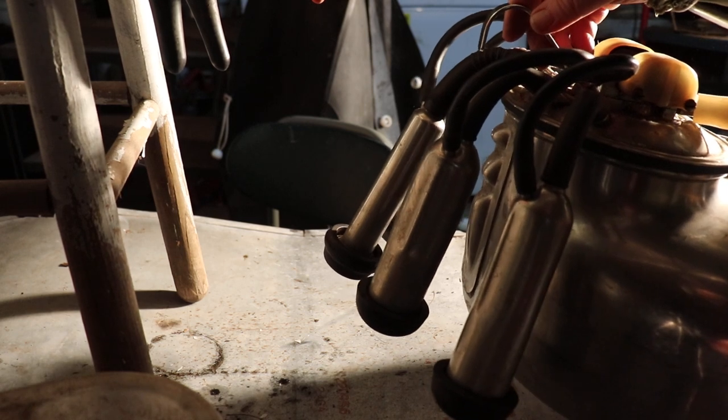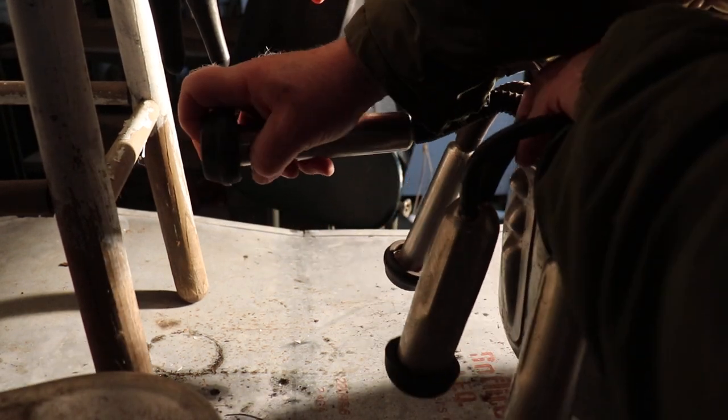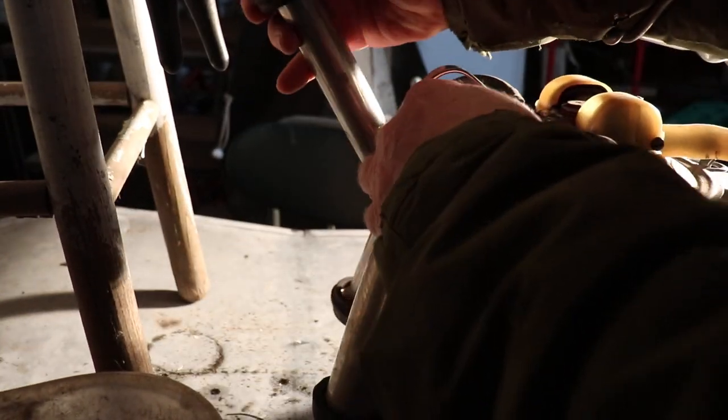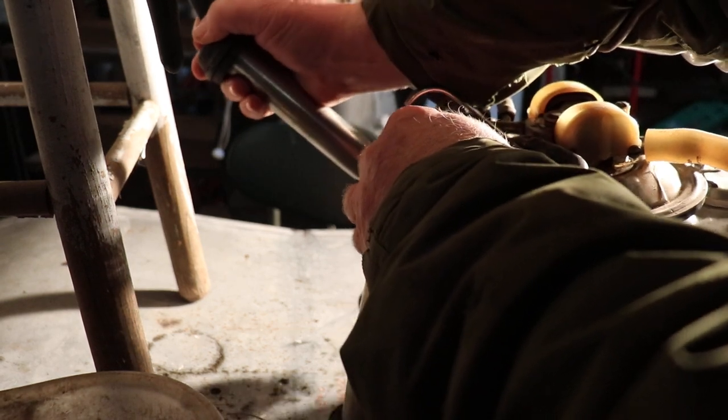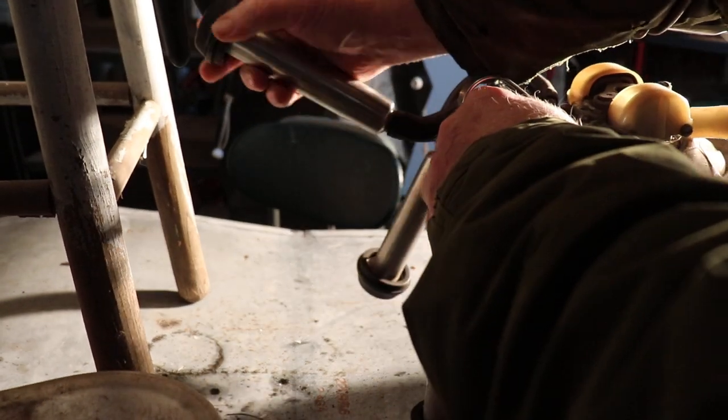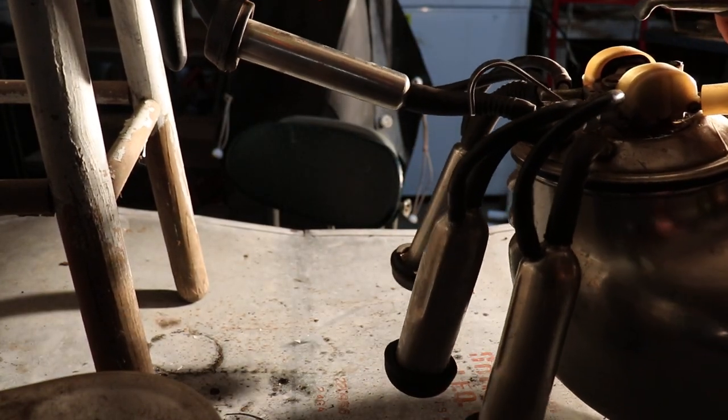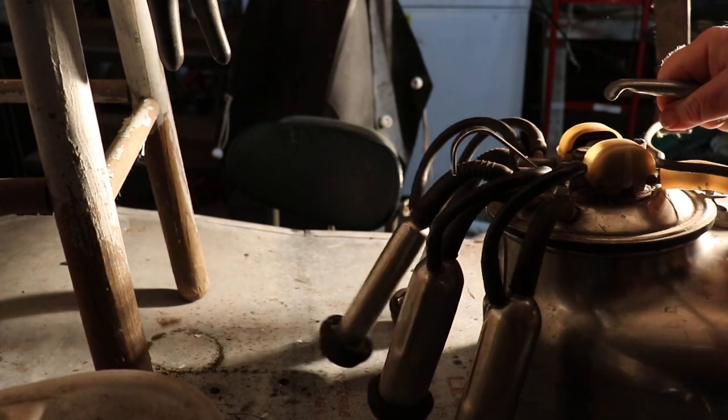You start out by grabbing the farthest back tit cup away from you. Put a kink in the hose so it isn't sucking vacuum. Grab it by the top so you can guide the teat in like this. We'll slide this down a little bit more. We'll take this strap down. It works better when it's sitting down flat.